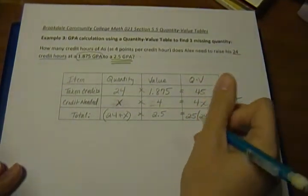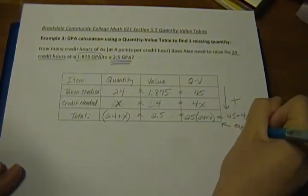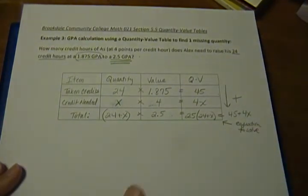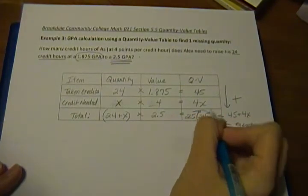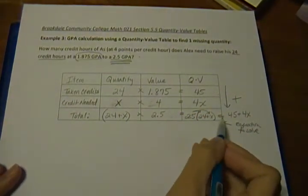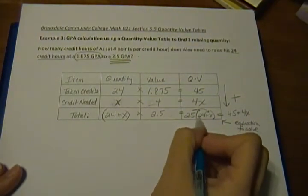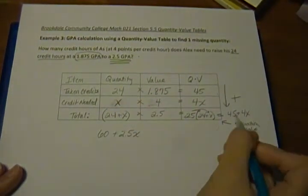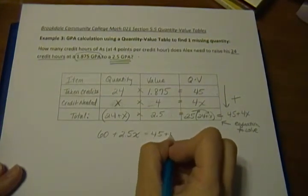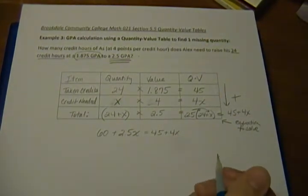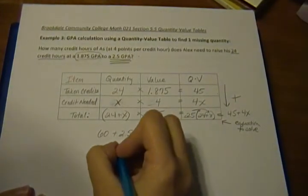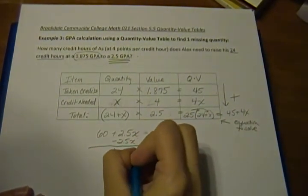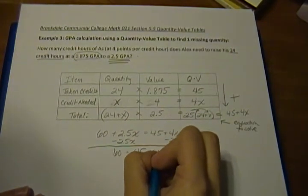Now we have our equation to solve. We can go ahead and use the distributive property to get this split up. So we're going to have 2.5 times 24 is 60 plus 2.5X equals the 45 plus 4X. So first thing, we want to get all of our unknowns, our variable, together. So we subtract 2.5X from both sides, and we get 60 is equal to 45 plus 1.5X.